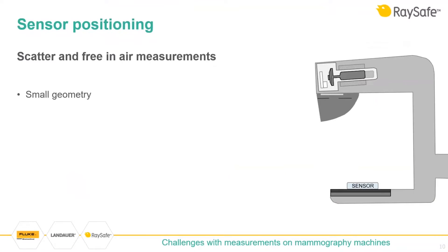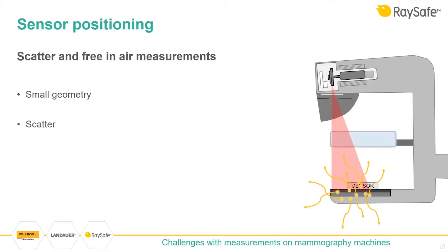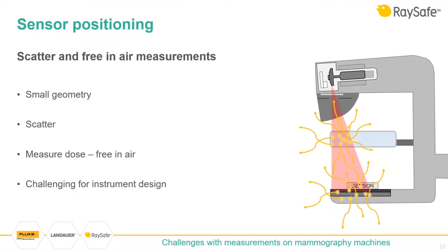Sensor positioning is another challenge. The small geometry of the mammography machine makes it difficult to perform high-position dose and HVL measurements because of scatter. Scatter can come from the examination table, from the compression paddle, and can bounce back from the collimator. What should be measured is dose in air — the measurement should not contain scatter. But a traditional ion chamber registers radiation from all directions, so it's impossible to place it free in air because of the short distances. This is a huge challenge.